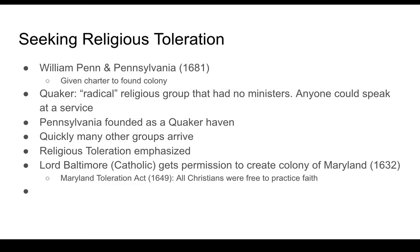The Calvert family, led by Lord Baltimore, were Catholic and got permission to create a Catholic haven — the colony of Maryland in 1632, named after a Catholic queen in Europe. In 1649, they created the Maryland Toleration Act, which allowed anyone who was Christian — whether Catholic, Puritan, or Quaker — to freely practice their faith. It was very tolerant for the time period, though it did not allow Jewish people or Muslims to practice their faith. Places like Rhode Island and Connecticut also emphasized toleration, having been established by banished Puritans.